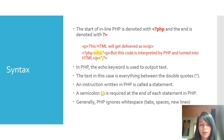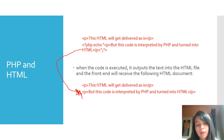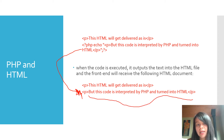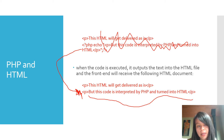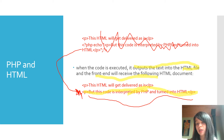This code will end up looking like plain HTML after it's been rendered on the server side and delivered to the browser. The browser only ever sees the rendered HTML code — it never sees the PHP code. It just looks like any other HTML paragraph block. When the code is executed, it outputs the text into the HTML file, and the frontend receives that. The browser can't render PHP code — it just reads the HTML. That rendering of PHP is done on the server side.